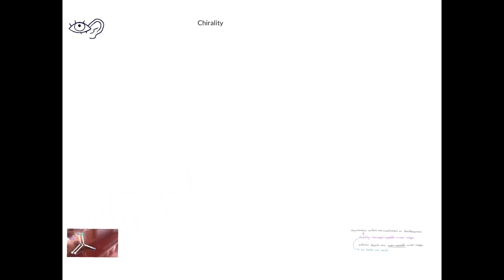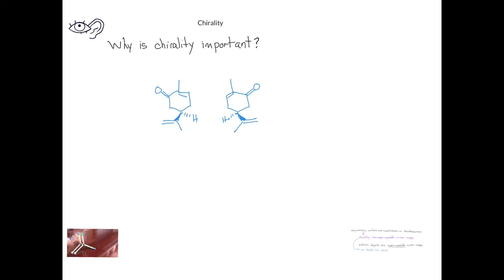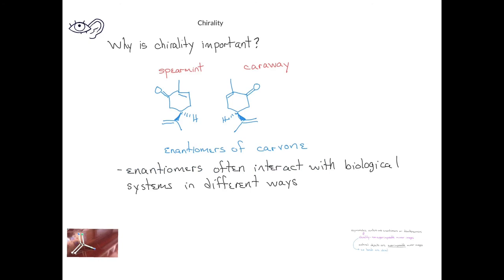What is the practical implication if a molecule has an asymmetric center or is chiral and has enantiomers? These two chemical structures represent the two different enantiomers of carvone. In one structure, the compound smells like spearmint. The second compound, which looks like a mirror image of the first, smells like caraway or kind of like fennel. Because they're non-superimposable mirror images, they're enantiomers, and the body will detect them in different ways. Many biological molecules will end up having enantiomers or asymmetric centers.